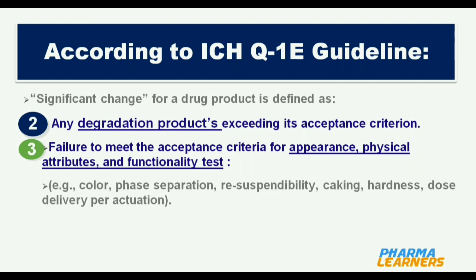Physical attributes include size, shape, color, phase separation, resuspendability for suspensions which settle on storage, caking, hardness, and functionality tests of dose delivery systems, which may include dose delivery per actuation, syringability, pressure, and seal integrity in the case of pre-filled syringes.